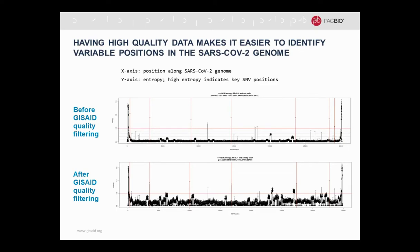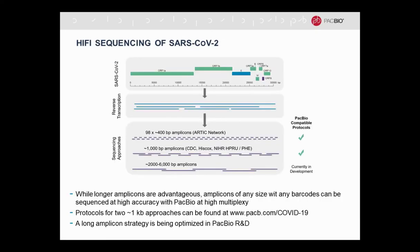Why is it important to have very accurate information? Having higher quality data makes it easier to identify variable positions in the SARS-CoV-2 genome, and those variable positions are really important for addressing a lot of research-type questions. In the top graph, this shows hotspots in the SARS-CoV-2 genome before any quality filtering is applied. In the lower graph, you can see what that same metric looks like after quality data filtering. There are hotspots that pop up in the quality-filtered regions that do not appear significant in the pre-quality filtering. This is what I mean when I say that long and highly accurate sequence data enables you to tell the difference between sequencing error and variants that are real.